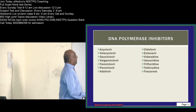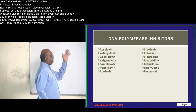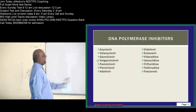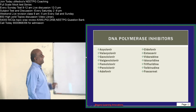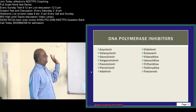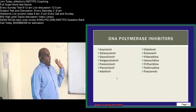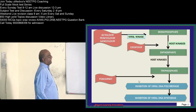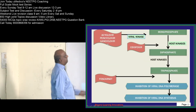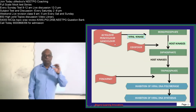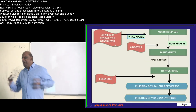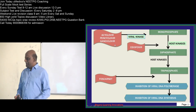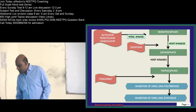DNA polymerase inhibitors include acyclovir, valacyclovir, gancyclovir, and adefovir, among others. Now, an interesting entrance exam question: which antiviral agent is the drug of choice in acyclovir-resistant cases?